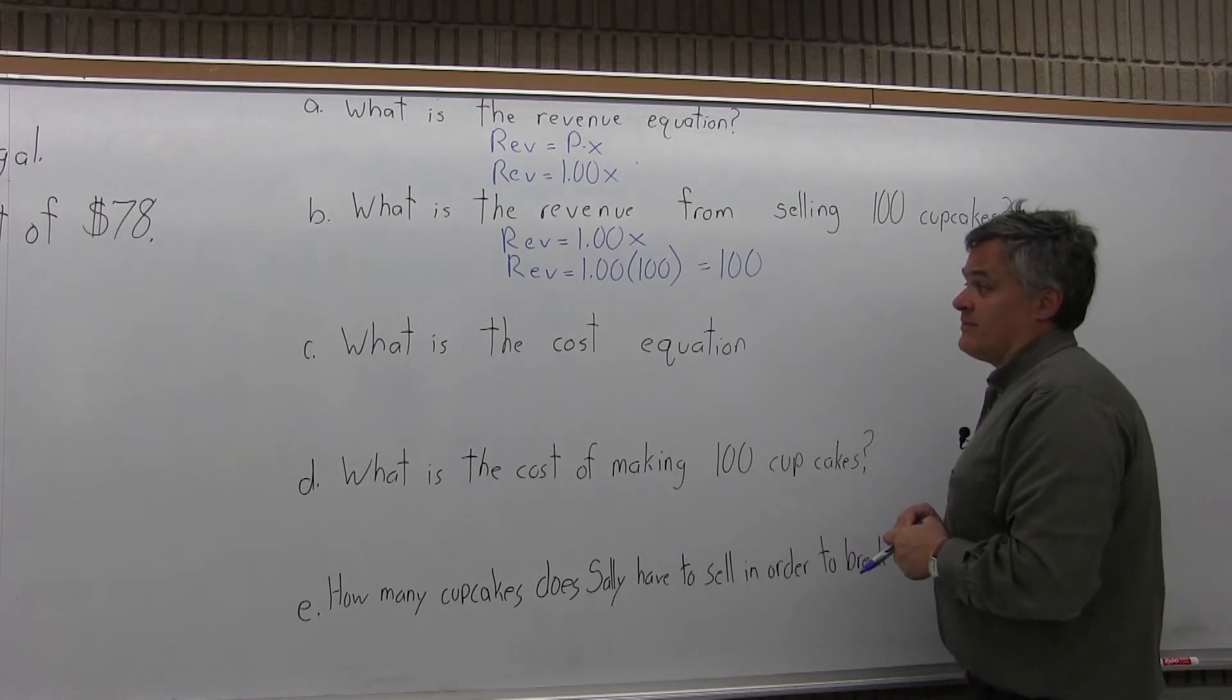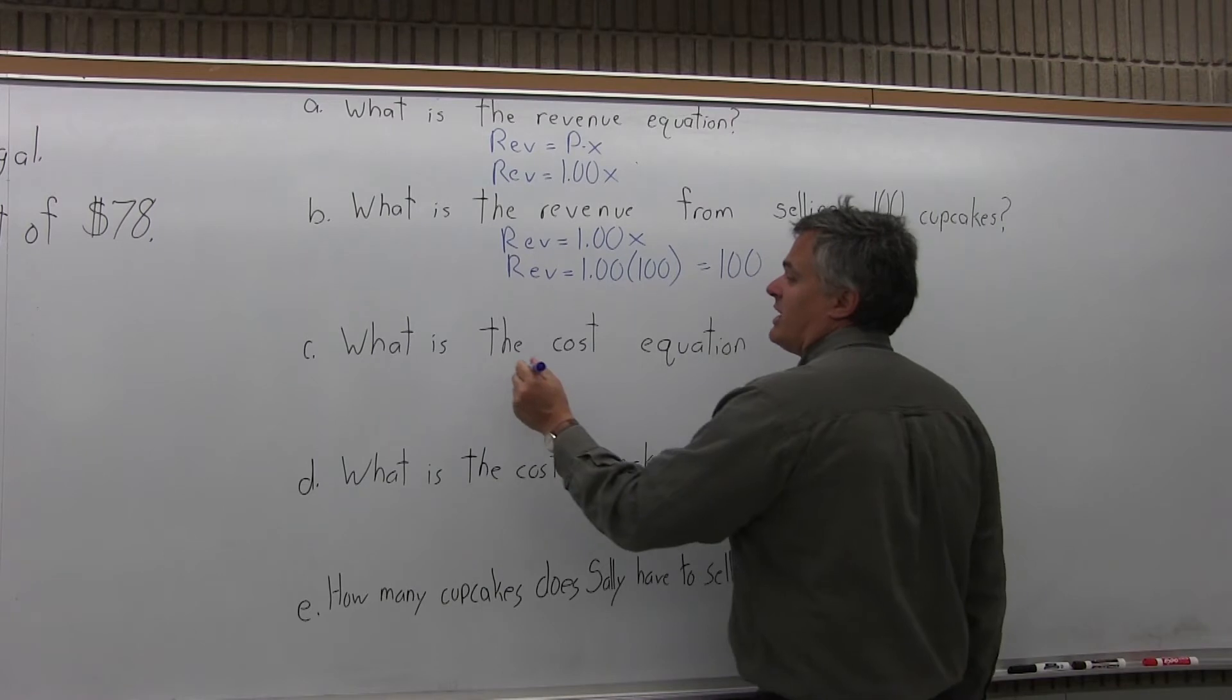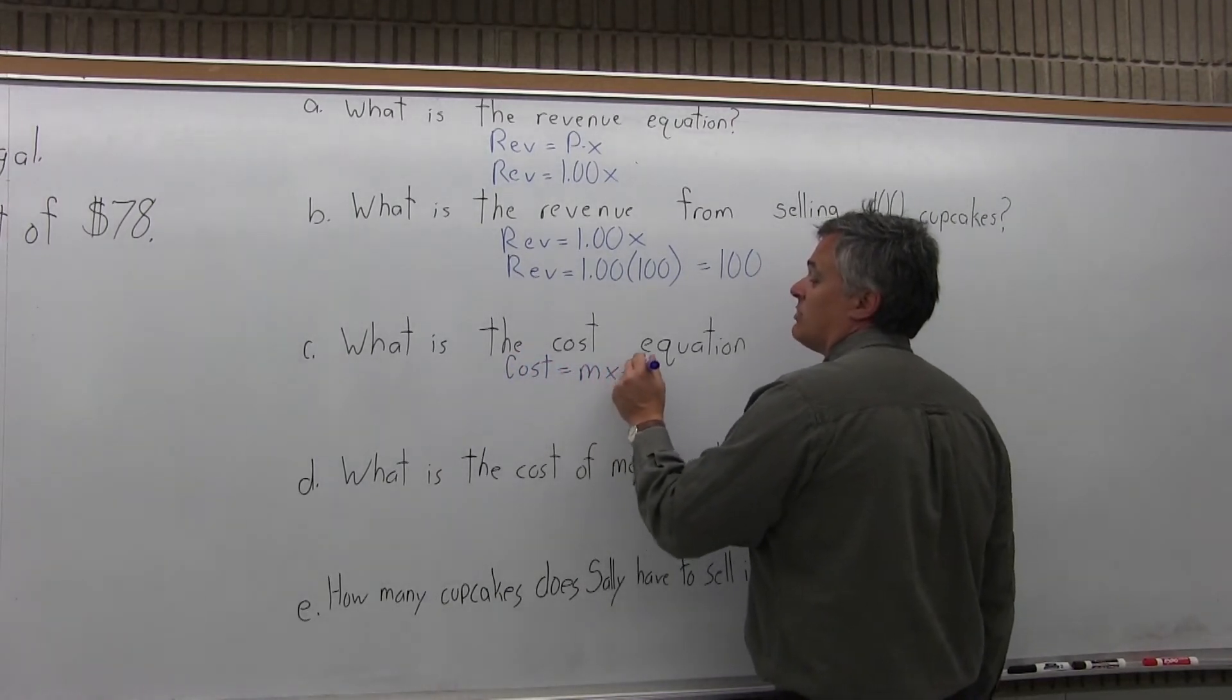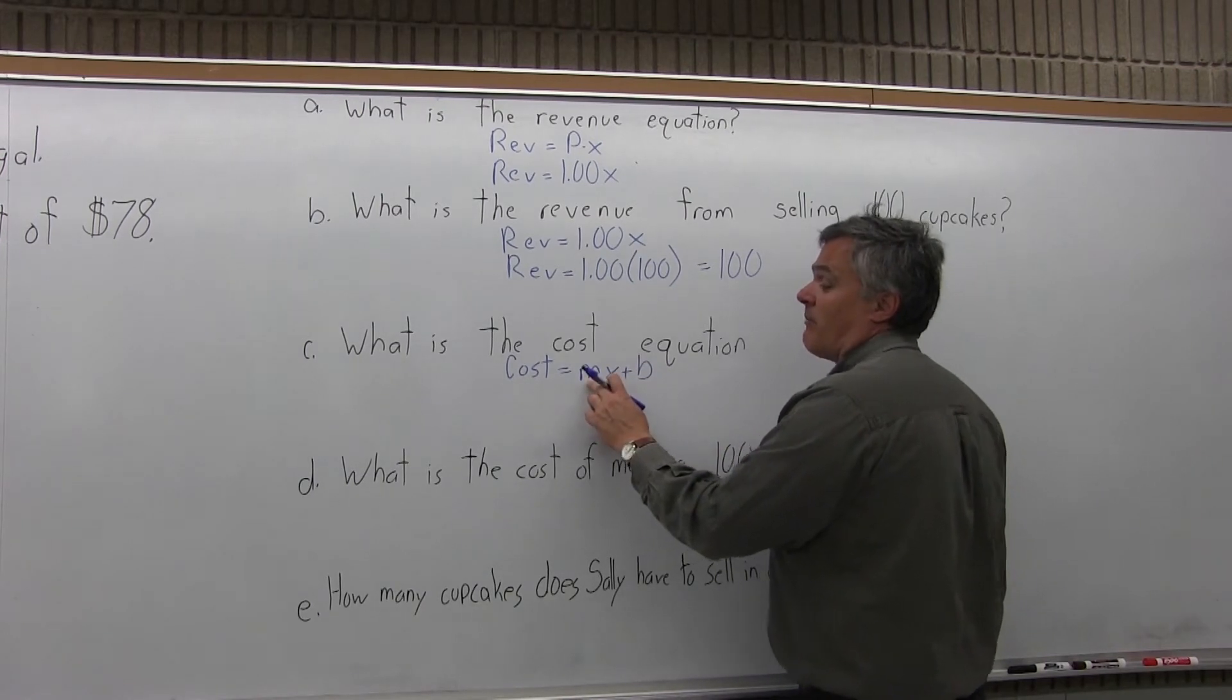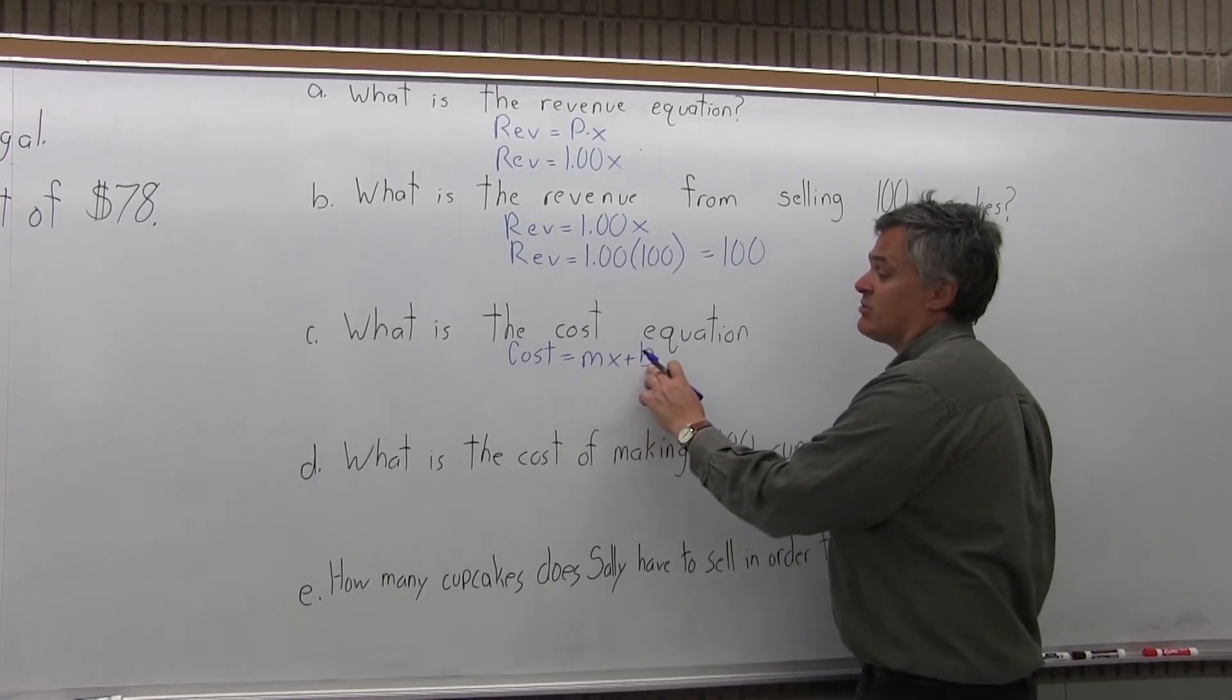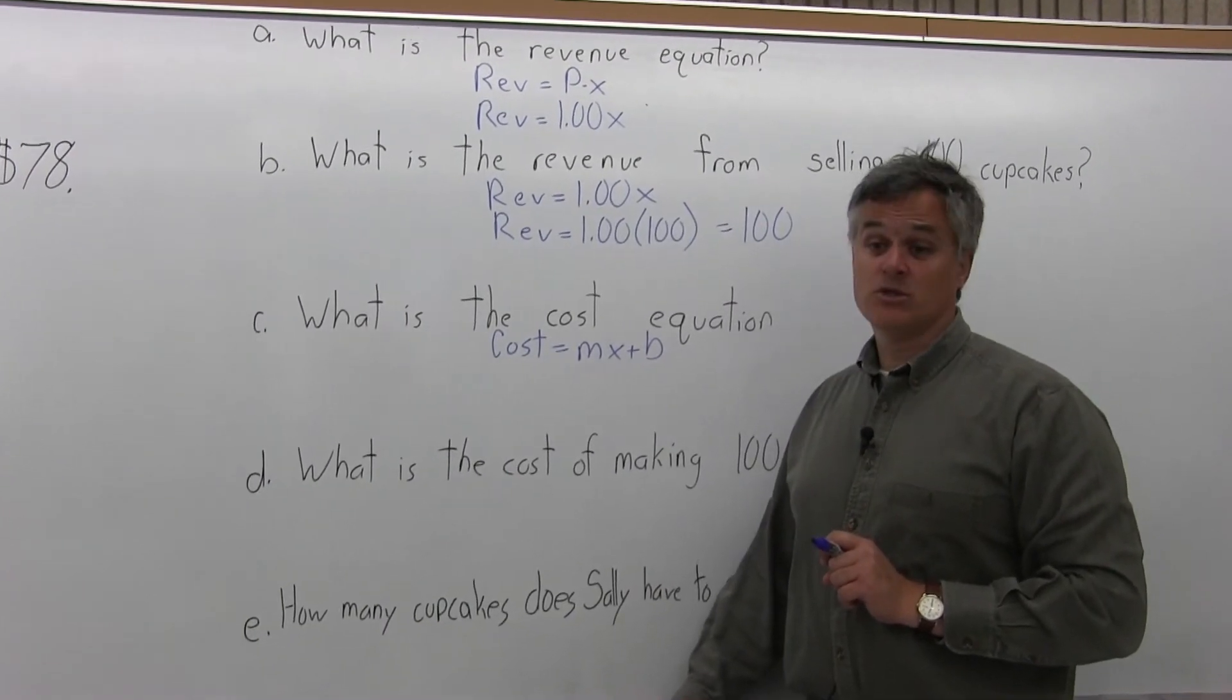Part C, what is the cost equation? The cost equation is MX plus B, where M is the cost per item or marginal cost, X is the number of items produced, and B is the fixed cost, which is the cost to stay in business even if no items are sold.